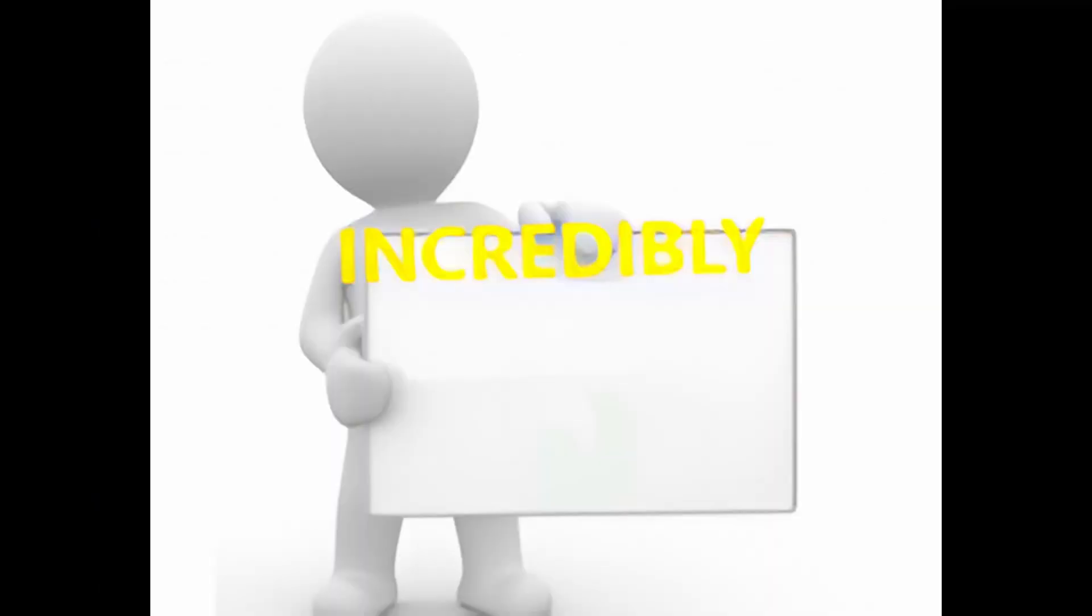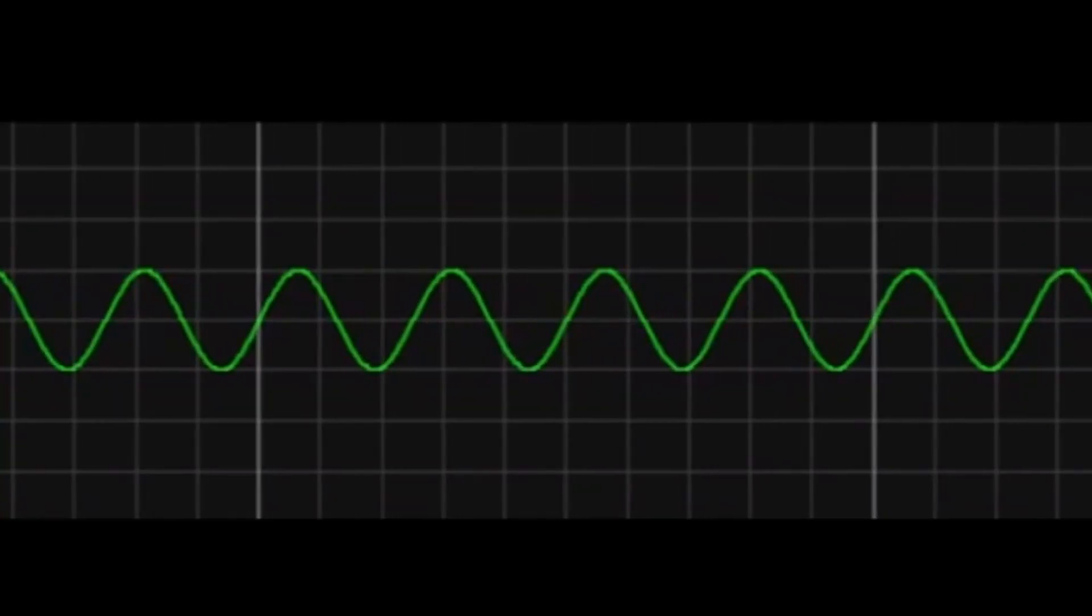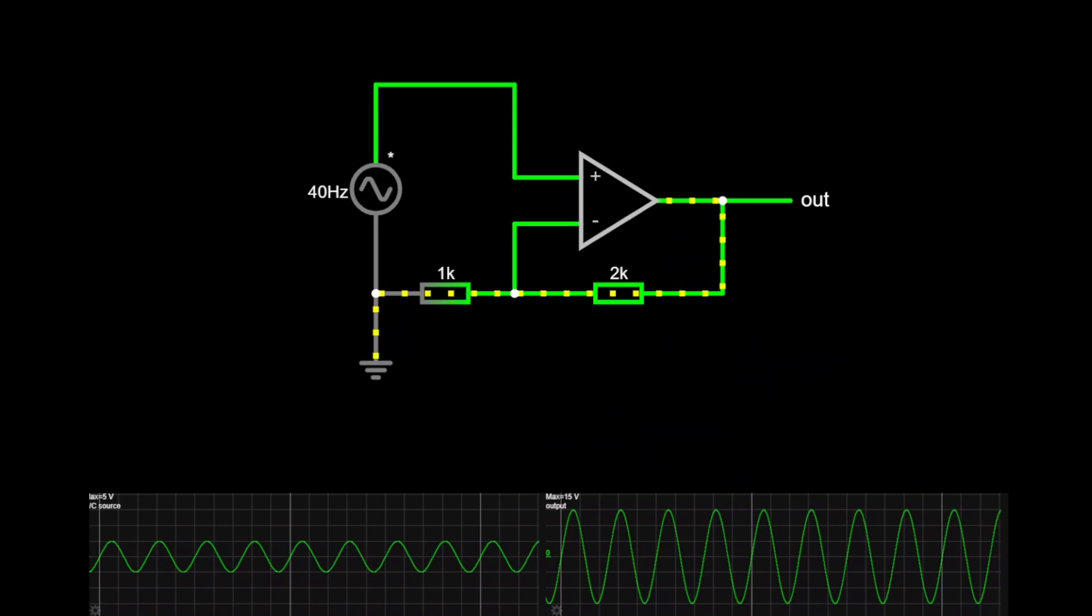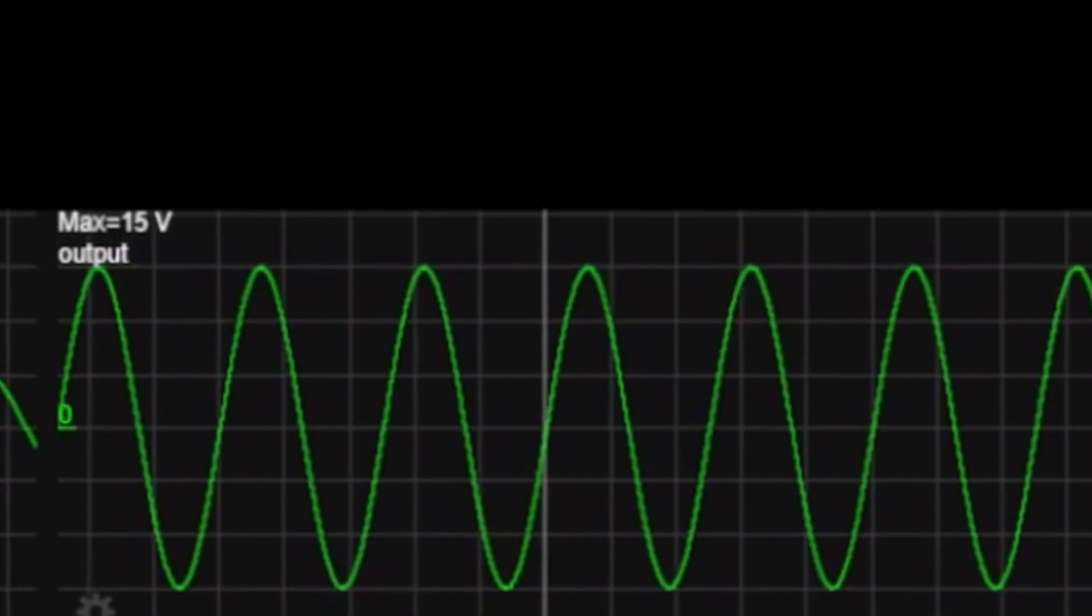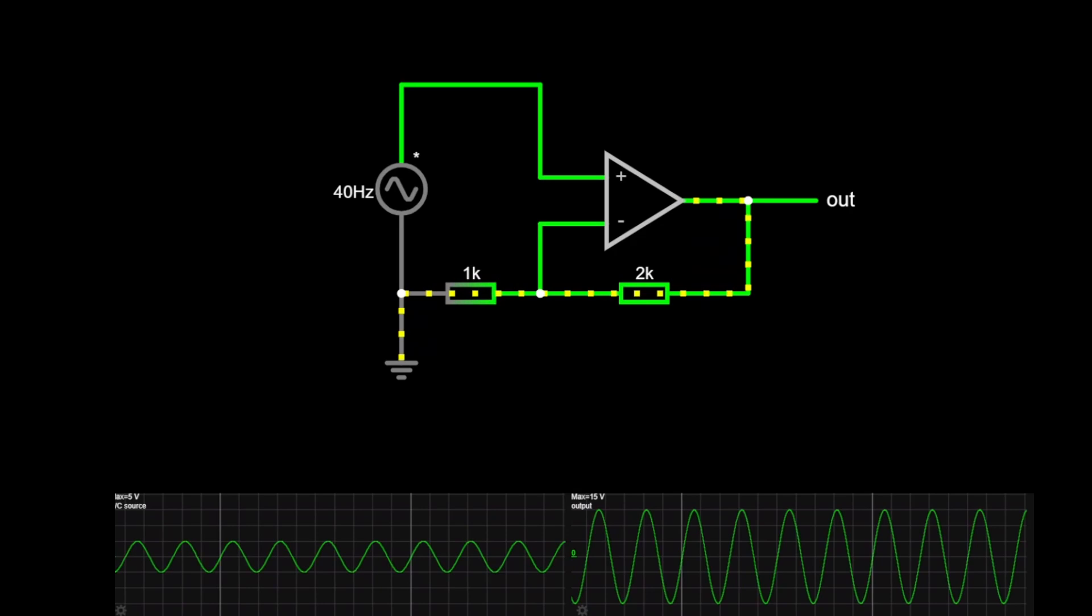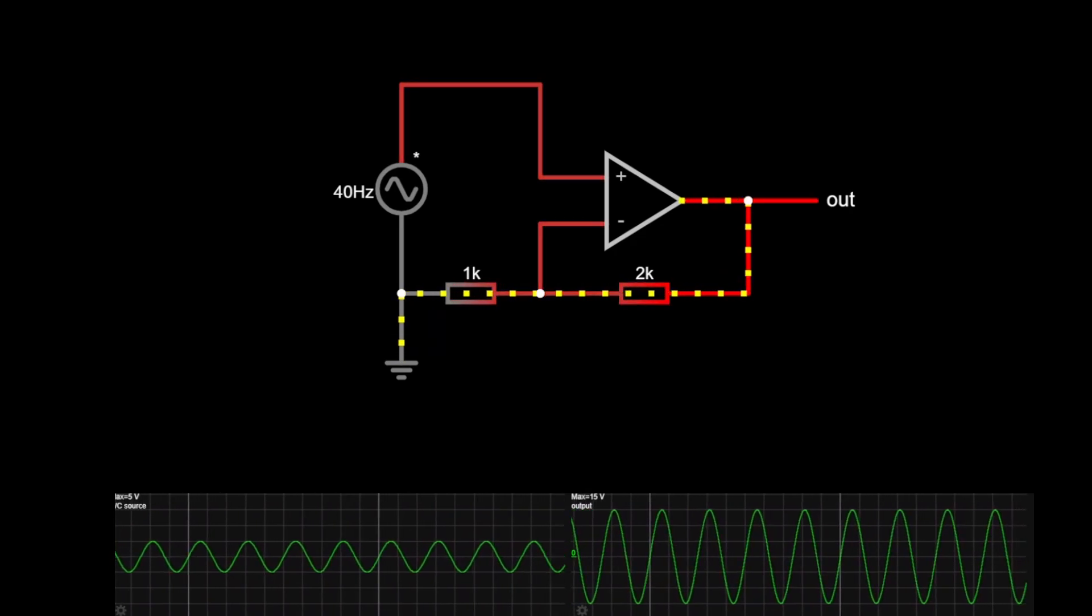Operational amplifiers. Incredibly useful devices that amplify signals. In this example you can see a 40 Hz sine wave peaking at 5 volts being amplified to 15 volts. The op amp is being used as a non-inverting amplifier.